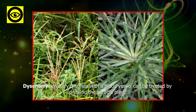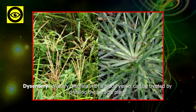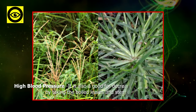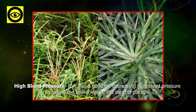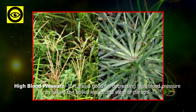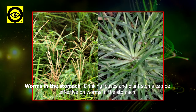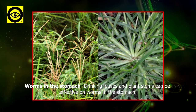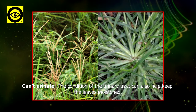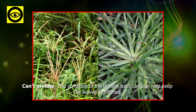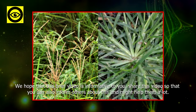Dysentery: watery diarrhea with blood can be treated by drinking the parages plant. High blood pressure: it is also good for decreasing high blood pressure by taking the boiled leaves and stem of parages. Worms in the stomach: drinking leaves and plant stems can be effective on worms in the stomach. Urinary tract: the condition of the urinary tract can also be helped by keeping the leaves moistened.